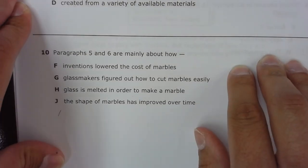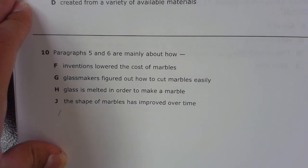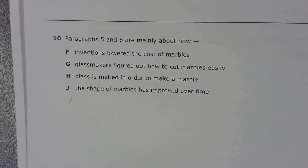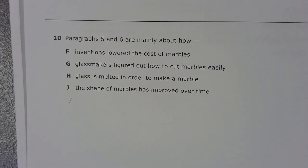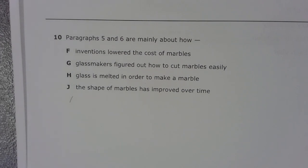Number 10. Paragraphs 5 and 6 are mainly about how F. Inventions lowered the cost of marbles. G. Glass makers figured out how to cut marbles easily. H. Glass melted in order to make a marble. J. The shape of marbles has improved over time.